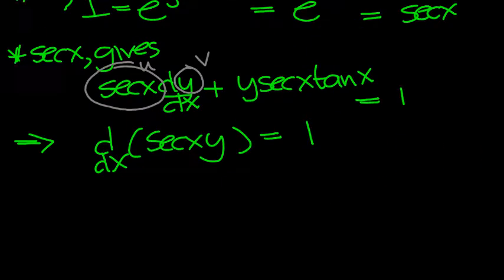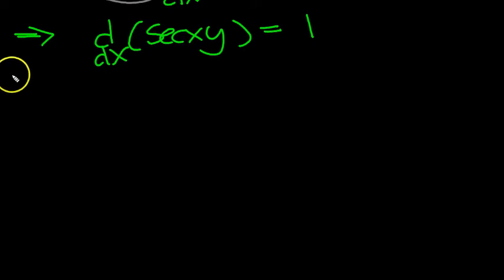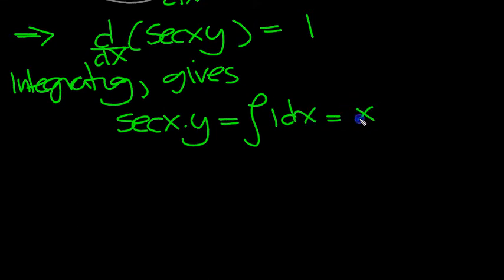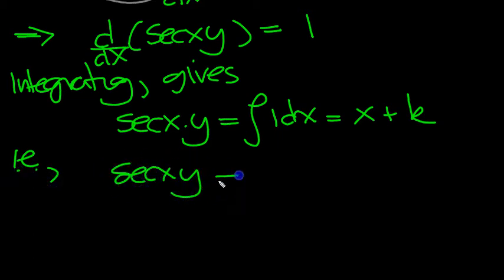Integrate both sides now. Looks fairly easy. Let's see if it turns out to be easy. Integrating gives, we're going to integrate the derivative so you get what's inside. Sec x times y and the integral of 1, which is equal to x plus a constant of integration, i.e. sec x times y is equal to x plus k.